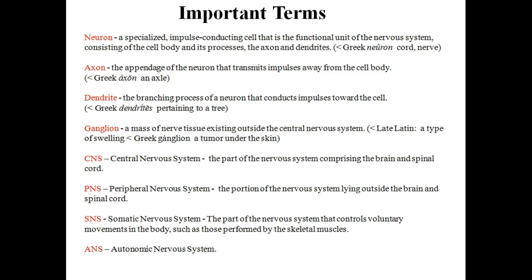Important terms to know are: neuron, which is a specialized impulse-conducting cell that is the functional unit of the nervous system; axon, which is the appendage of the neuron that transmits impulses away from the cell body; dendrite, the branching process of a neuron that conducts impulses toward the cell; and ganglion, a mass of nerve tissue existing outside the central nervous system.